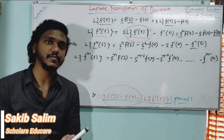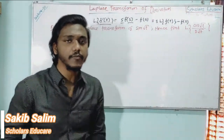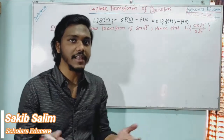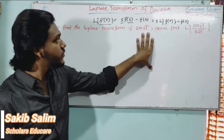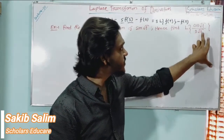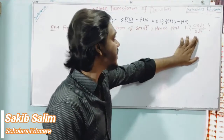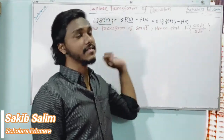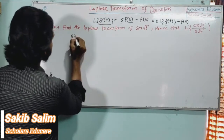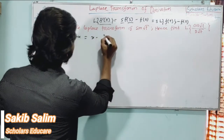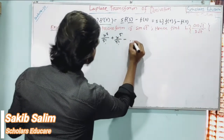We can practice an example of the Laplace Transform derivative properties. Find the Laplace Transform of cos(√t) divided by 2√t. We write about sin(√t) Laplace Transform, then cos(√t)/(2√t). We know that sin(x) equals x minus x³ divided by 3 factorial plus x to the power 5 divided by 5 factorial minus dot dot dot.